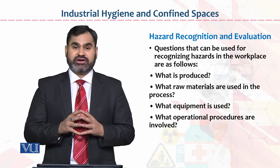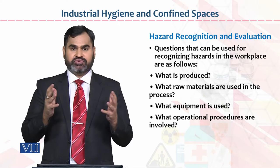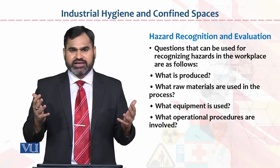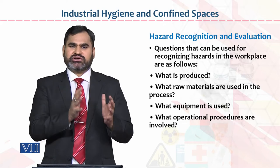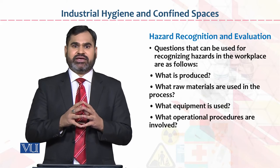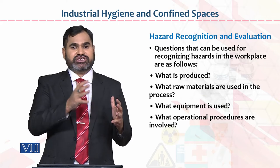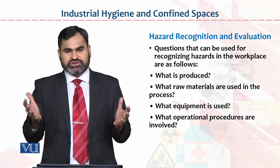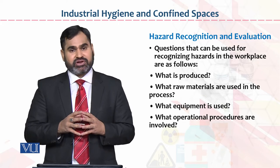Workplace में hazards recognize करने के लिए following questions use किये जा सकते हैं। Number one: What is produced? — Organization बना क्या रही है। अगर वो chemical बना रही है, तो chemical engineer बताएंगे कि किस chemical से कौन सा reaction या disease हो सकती है, और उसके SOPs बना के उसे control करना easy है। Raw materials are used in the process — उनके भी SOPs बनाएं।